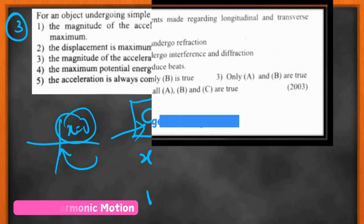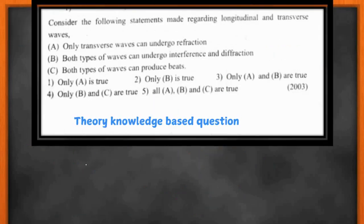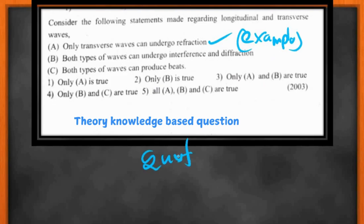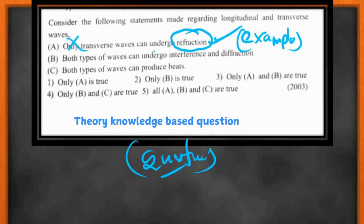As mentioned, some statements cannot be linked to an equation. Here is an example: consider statements about longitudinal and transverse waves. The first statement says only transverse waves can undergo refraction. In this case, think of examples from questions you've practiced. Refraction is a wave property — it doesn't matter whether the wave is transverse or longitudinal. Both types can undergo refraction, so the statement is wrong.